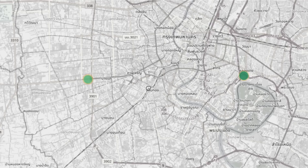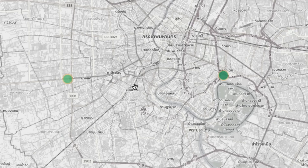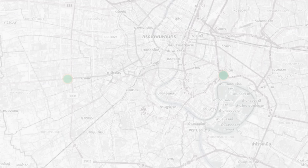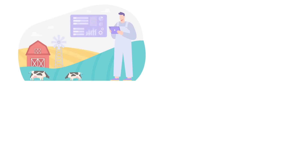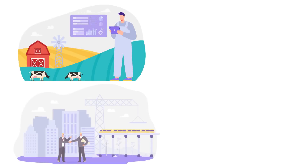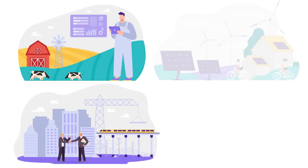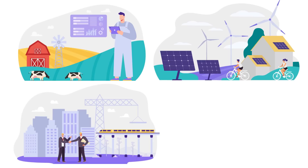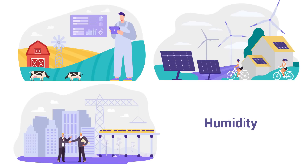Industries that can benefit from using GeoHeatmaps and IoT platforms include agriculture, environmental monitoring, smart city infrastructure, construction, engineering, energy and utilities, and others. This can be useful for analyzing data such as water levels, humidity, pollution, and other sensor readings in real time.